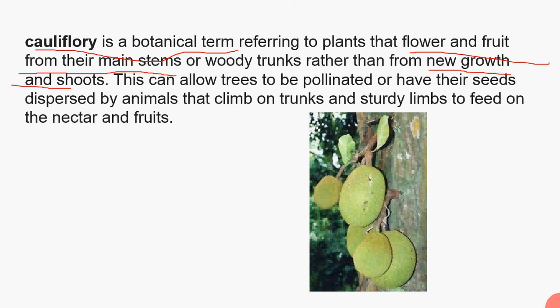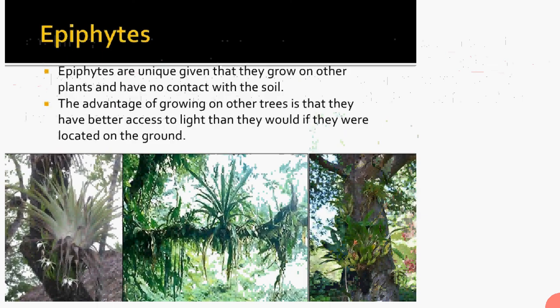You can see here that fruit has grown on the main branch — this is jackfruit. An extra fact: its scientific name is Artocarpus heterophyllus. Now we will discuss epiphytes. Epiphytes are unique in that they grow on other branches that have no contact with the soil.